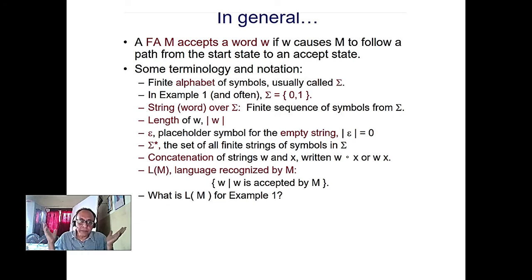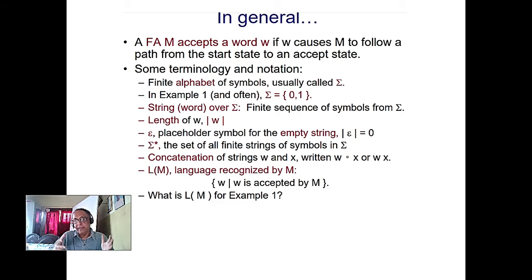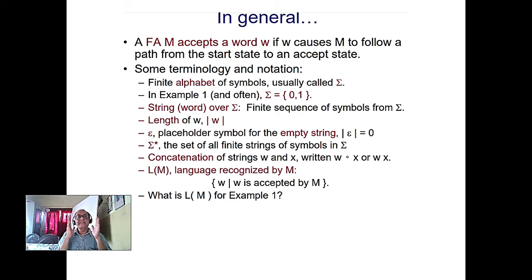Every finite state machine has one and only one language, and that language is called a regular language. Regular languages are what we use in Unix commands — for example, 'ls *.c' uses a regular expression where star means anything can come before the dot. Similarly, finding files that start with 'a' using 'a*.c' is a regular expression.